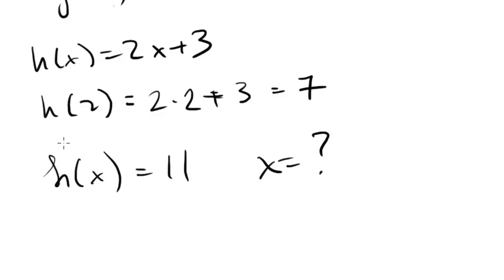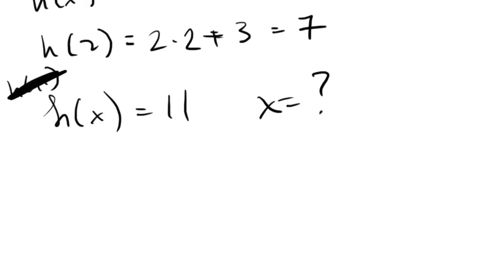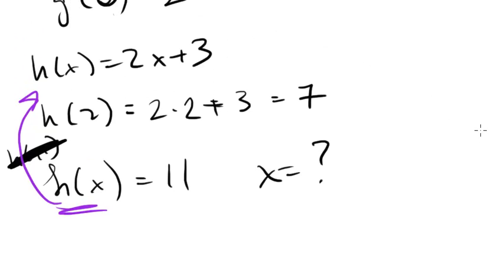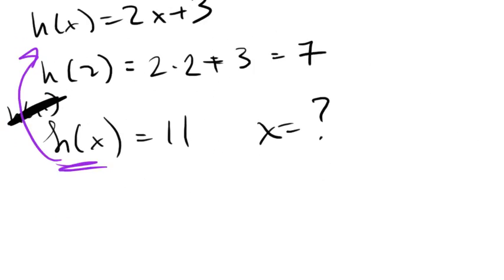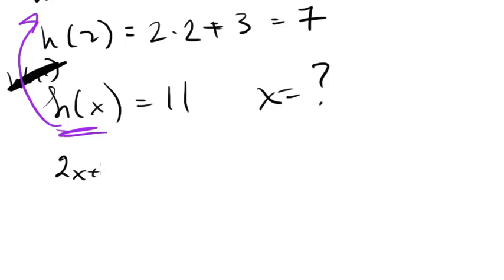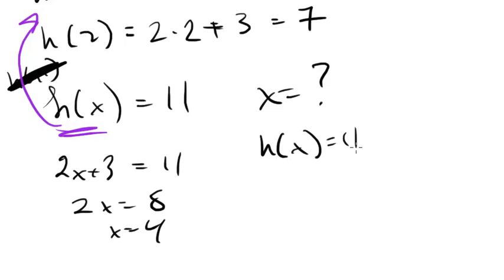Notice I'm not asking for h of 11. I'm asking for what is x when h of x equals 11? Well, what we do is, let's just substitute h of x for what h of x is. h of x is just 2x plus 3. So I'm just going to say 2x plus 3 equals 11. And then I solve. 2x equals 8, x equals 4. So when h of x equals 11 for this given h function, then our x is going to equal 4.